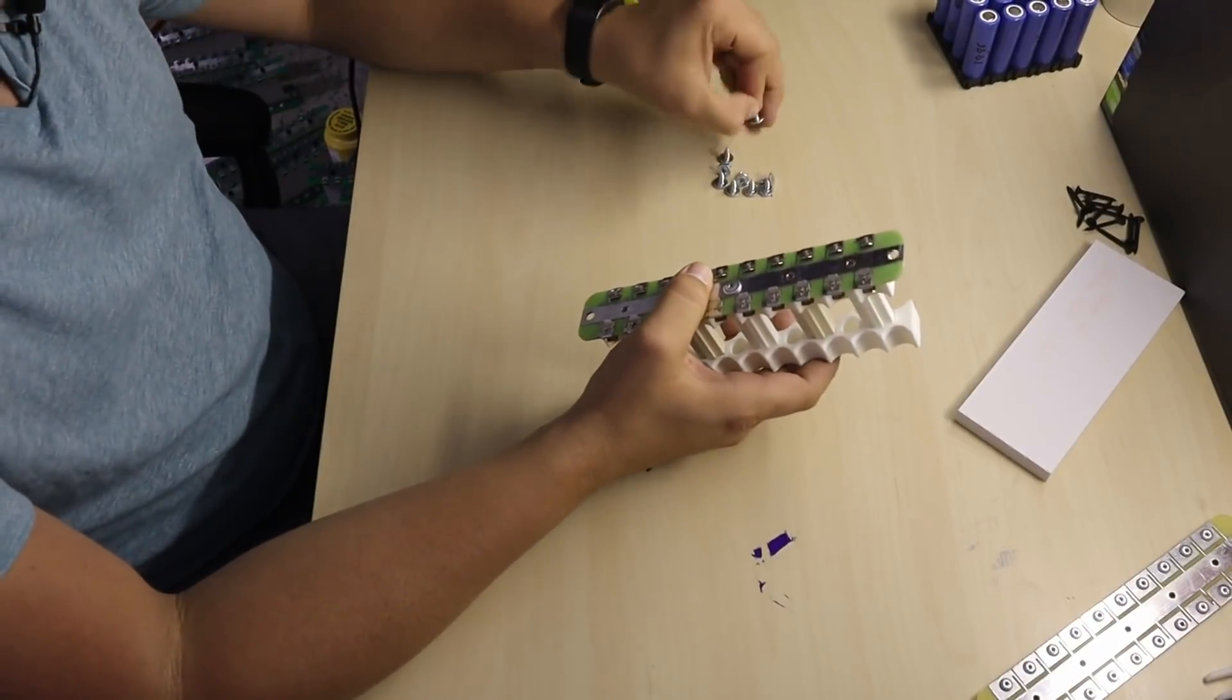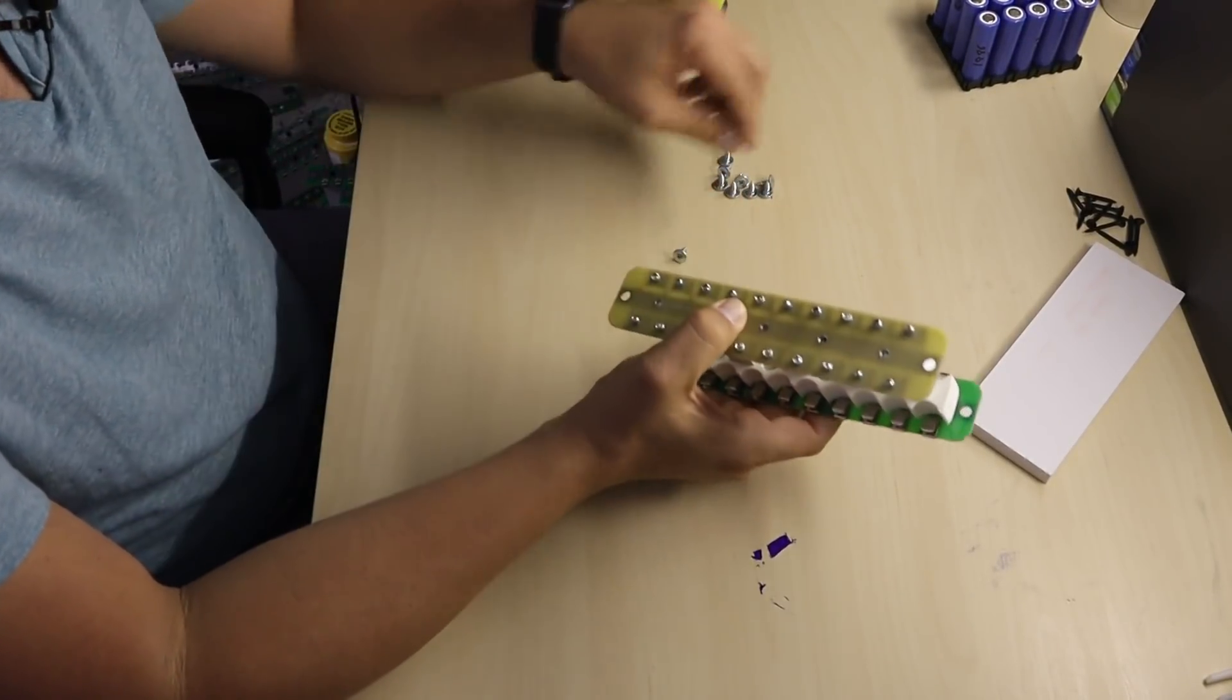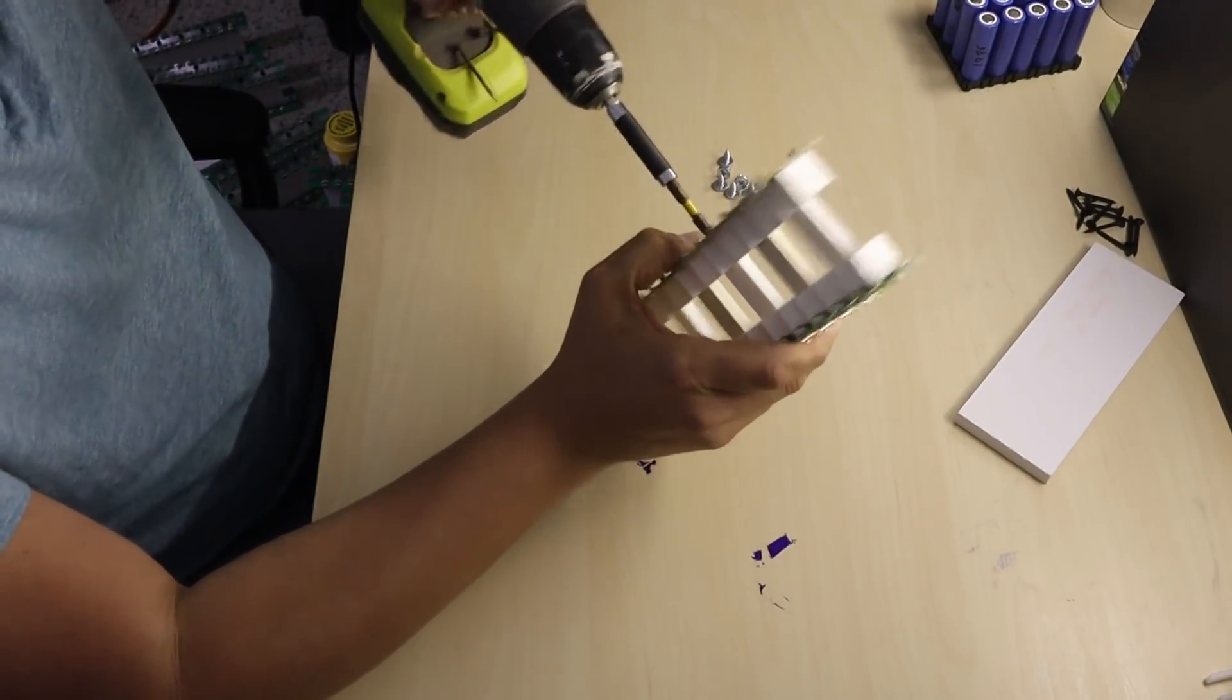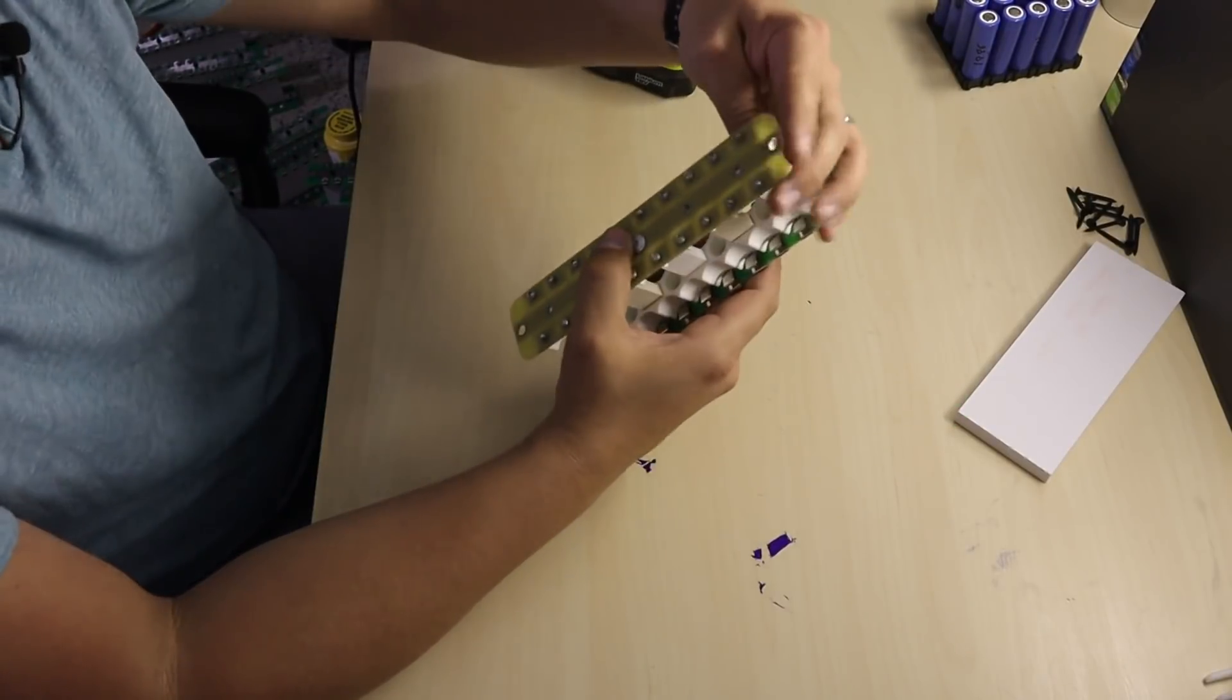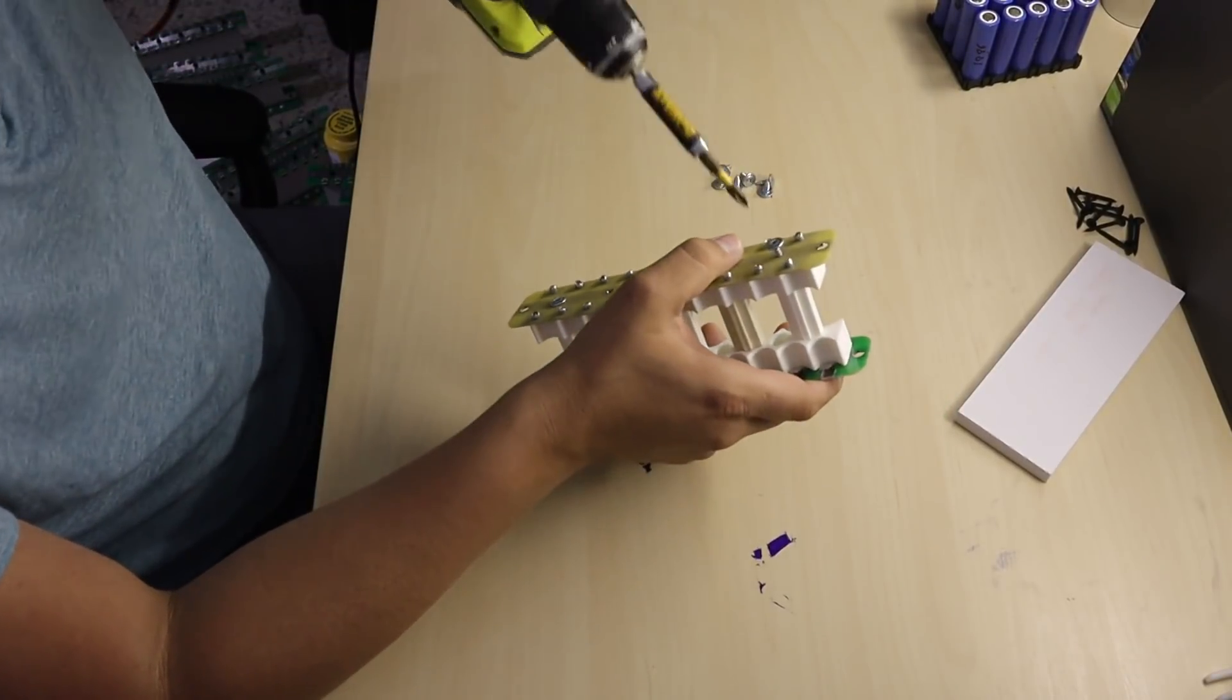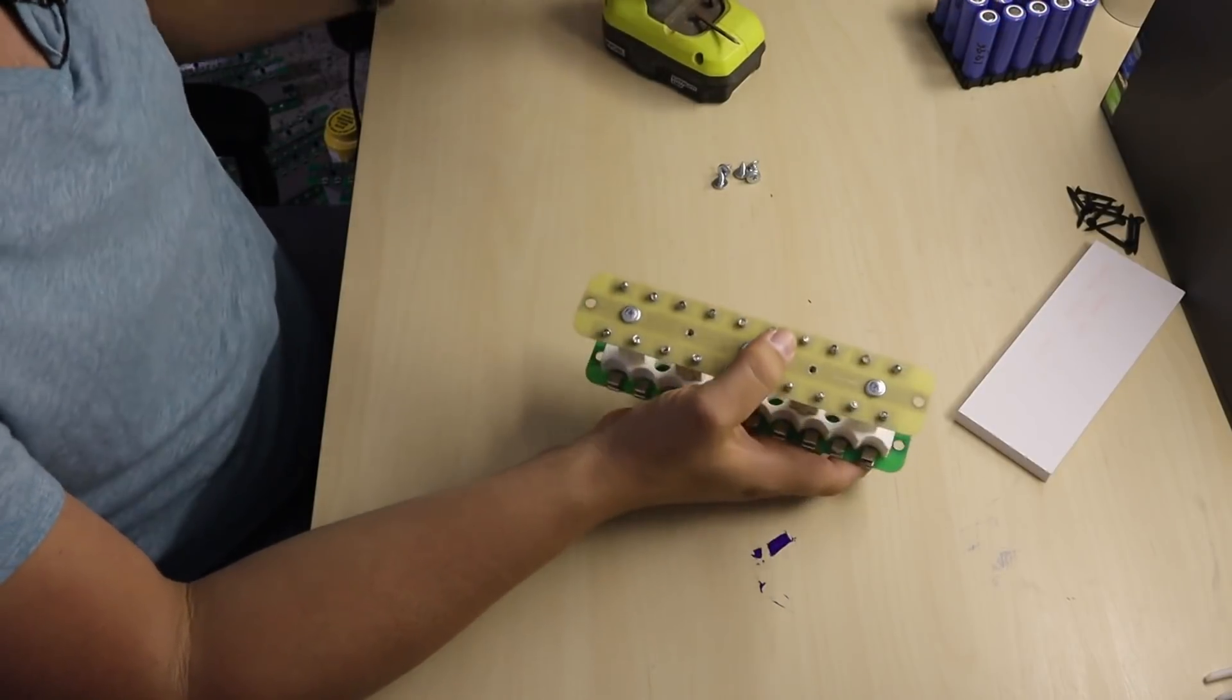Just like that you start screwing it. This one is super easy to install because all you have to do is align the PCB with the holes and that's it. You don't need a drill to assemble one of these modules, but it's just so much easier.